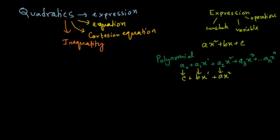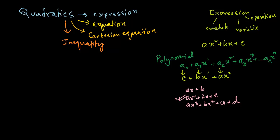Some examples of polynomials, written in standard form with the highest power of x in front: ax plus b is a first degree polynomial or linear; ax squared plus bx plus c is a second degree polynomial or quadratic; ax cubed plus bx squared plus cx plus d is a third degree polynomial or cubic. A polynomial is an expression where all the powers of the variable x are positive. A quadratic expression is a second degree polynomial expression.